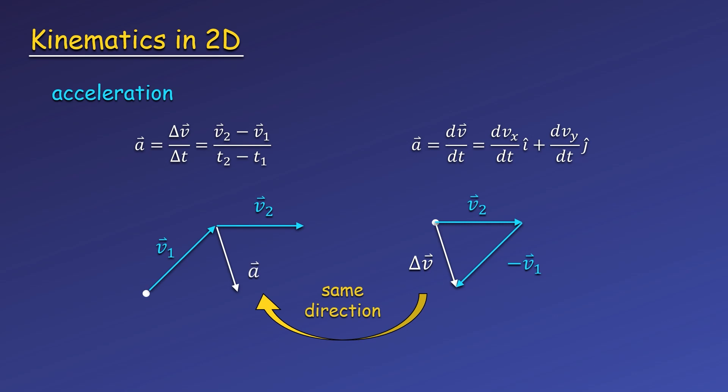Notice that the direction of delta v, and therefore the direction of acceleration, are different from the direction of both v1 and v2. The direction of acceleration does not depend on v1 or v2 by themselves, only the difference. I've also drawn this acceleration and velocity vector together to illustrate the direction of acceleration, but you should remember that acceleration and velocity are two different quantities and they cannot be added or combined in any way.